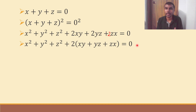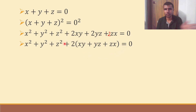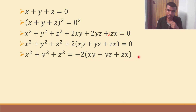Now, listen carefully — this will require some attention. Send the 2 into xy plus yz plus zx to the RHS. So I get x² plus y² plus z² equals minus 2 into xy plus yz plus zx.